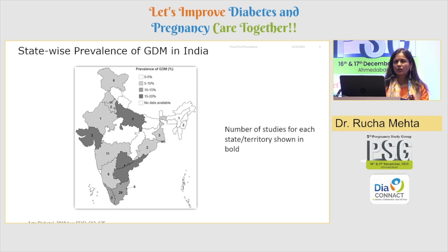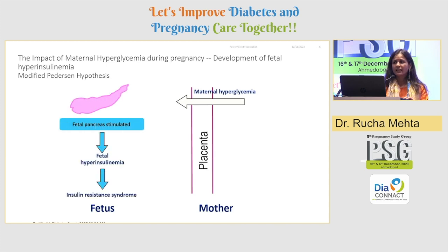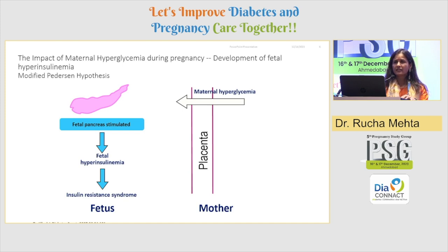Understand this is not a small number. The prevalence of GDM in Gujarat is 15–20%, which is quite high. Going back even before Barker's hypothesis, Pedersen and Frankel spoke about theories that whenever there is maternal hyperglycemia, we are basically trying to provide nutrition to the fetus. If there is excess sugar — fetal over-nutrition — the fetal pancreas gets stimulated, leading to high insulin levels. This could lead to insulin resistance in the fetus, macrosomia, and several complications.